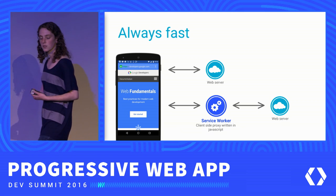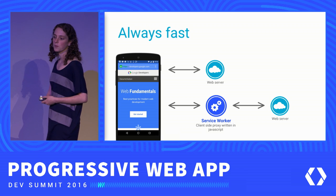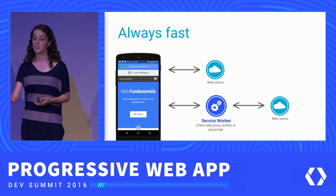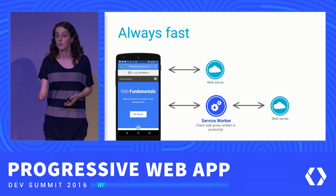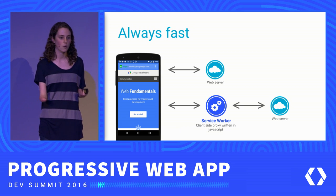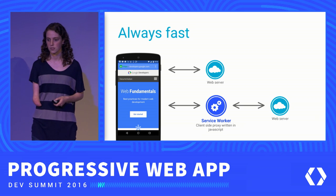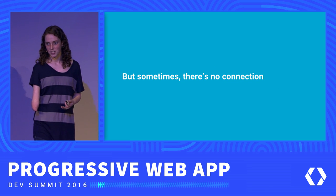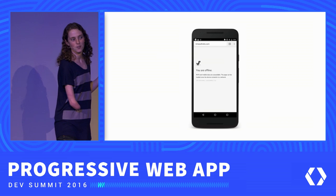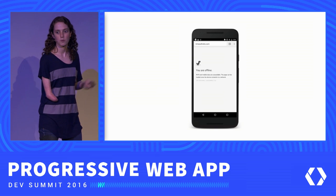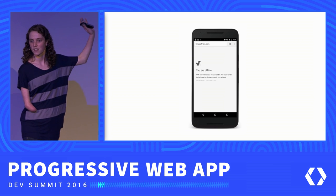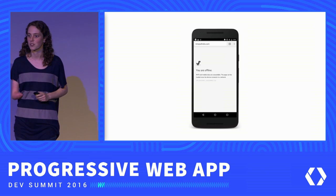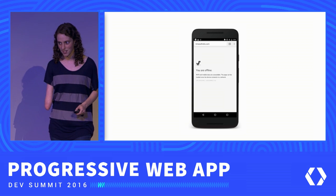What you can do here is, with Service Worker, you can actually implement request timeouts to address these flaky connections, so that if a user is on that really slow connection, they're still getting something very quickly and they're not waiting for it to load. But we do know that sometimes there's no connection. We've seen the offline dino a lot today when talking about Service Worker, and we're really trying to make sure that you have all the tools you need to kill the offline dino so that when a user goes to your experience, they're never going to see that offline dinosaur.